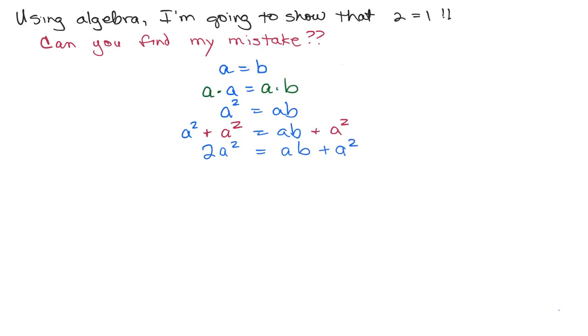Next step, I'm going to subtract 2AB from both sides. So I have 2A squared minus 2AB on the left, and on the right-hand side, I have AB plus A squared. And I'm also going to subtract 2AB on the right-hand side.